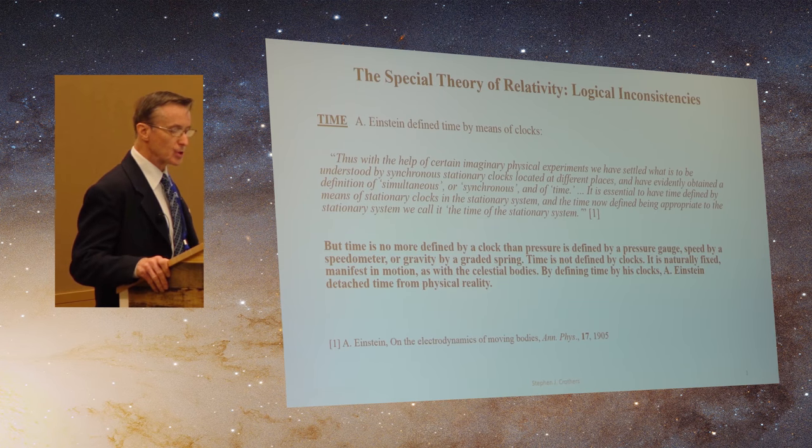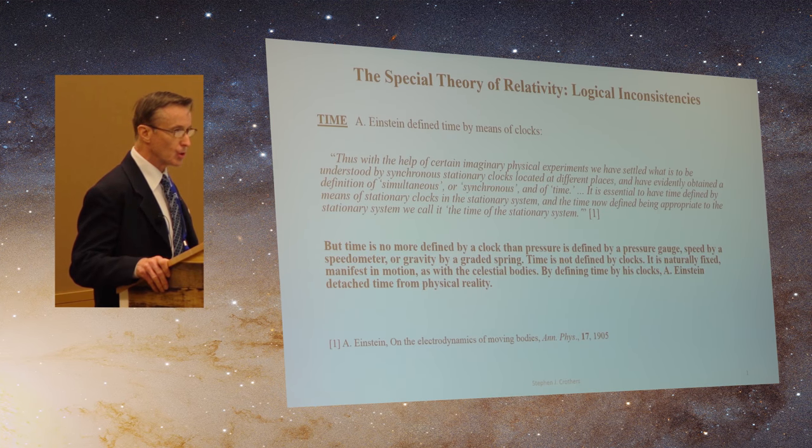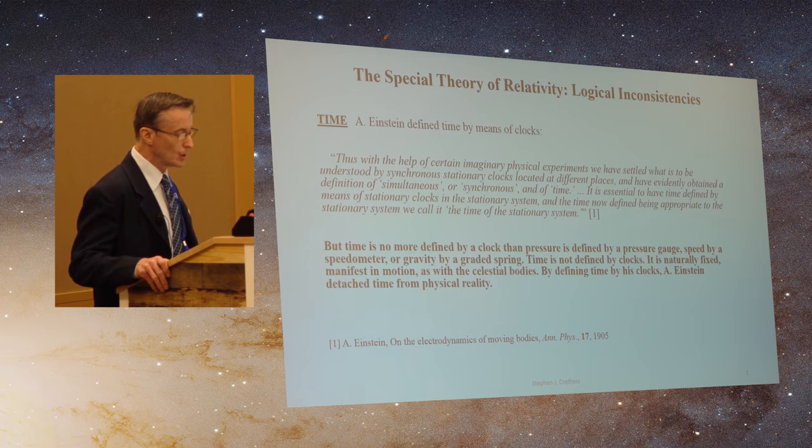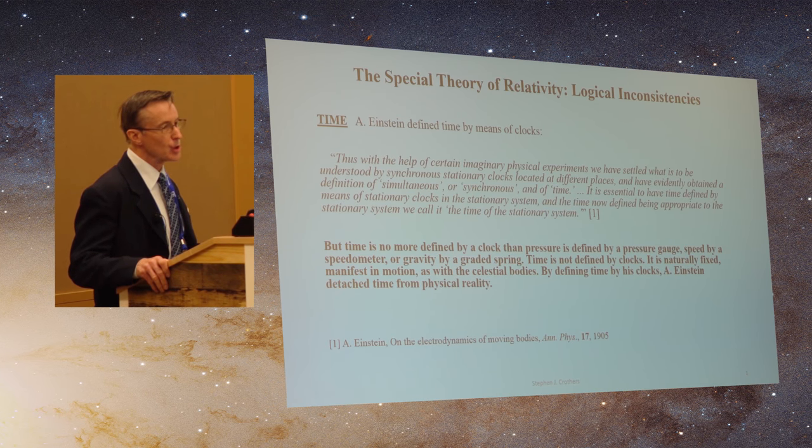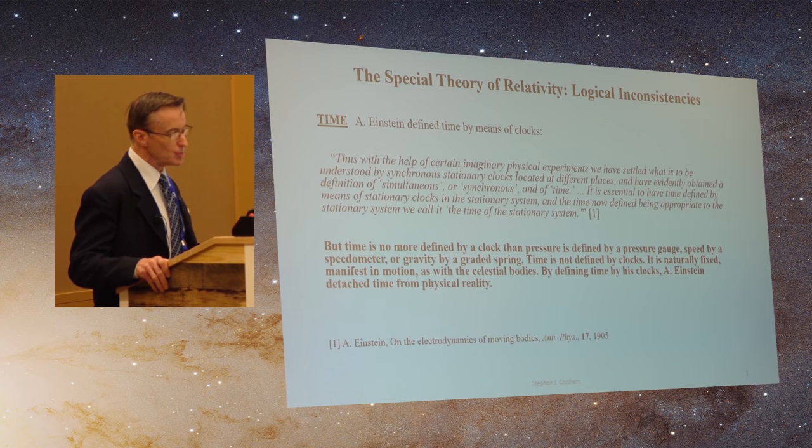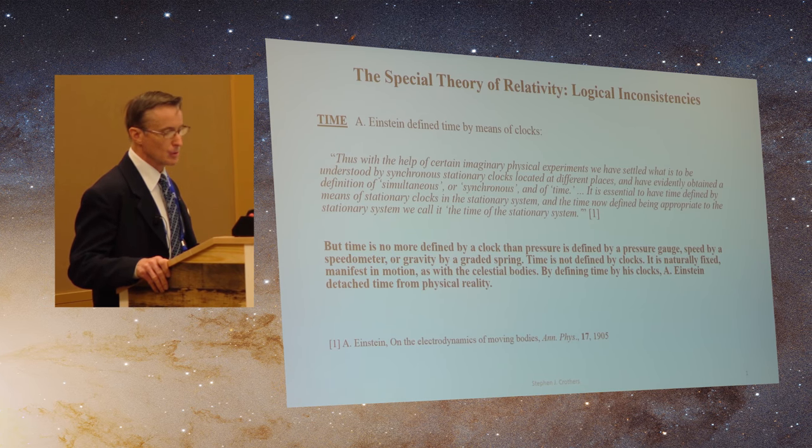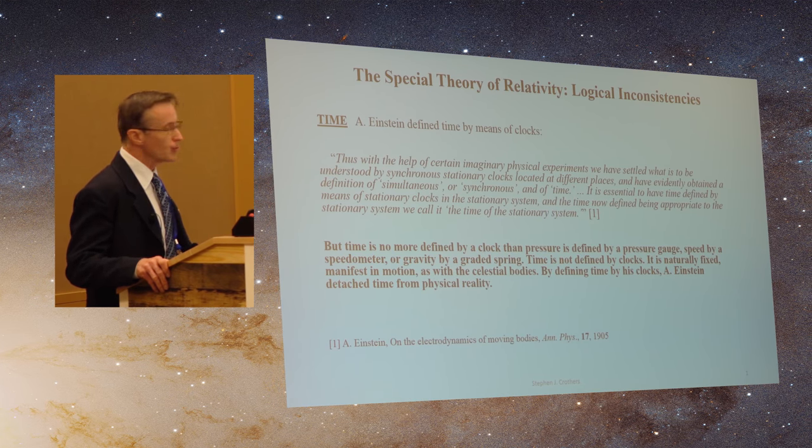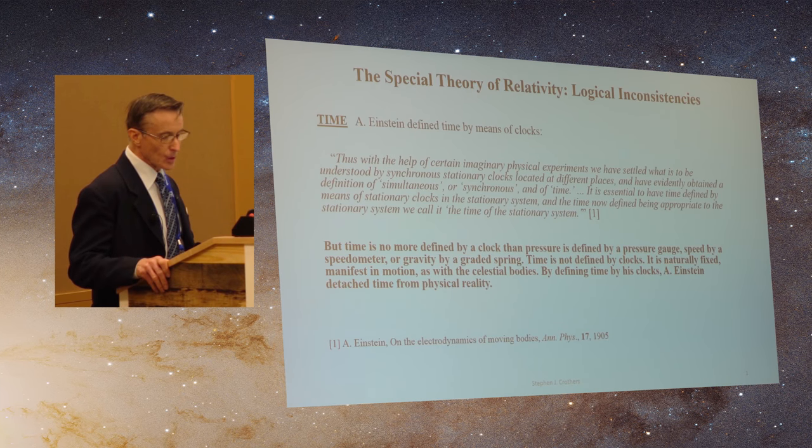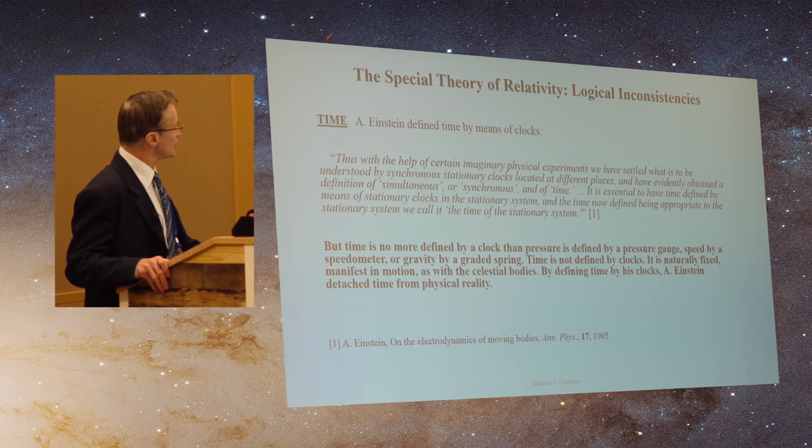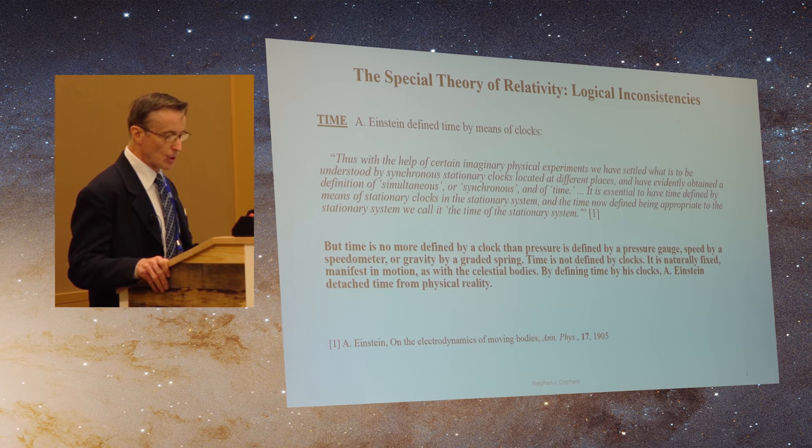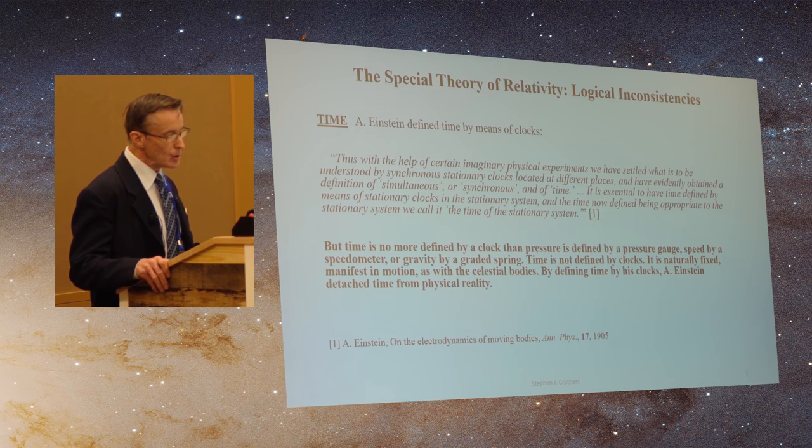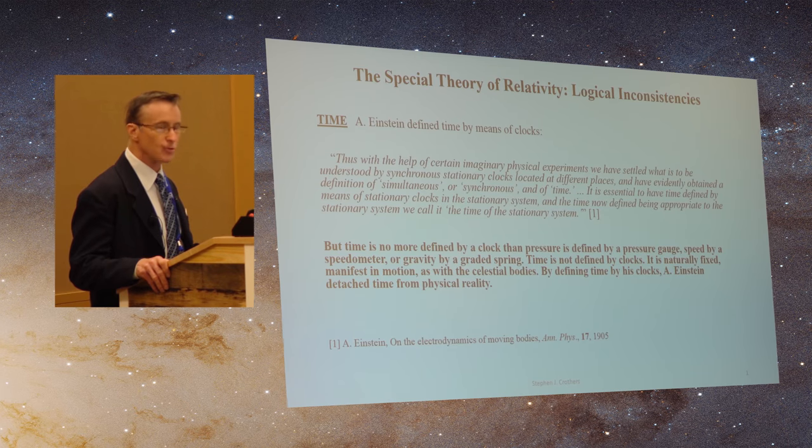In formulating his theory of special relativity, Einstein defined time by means of clocks. But time is no more defined by a clock than pressure is defined by a pressure gauge, speed by a speedometer, or gravity by a graded spring. Time is not defined by clocks. It's naturally fixed, manifest in the motion of bodies such as celestial bodies. By defining time by clocks, Albert Einstein detached time from physical reality.